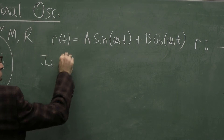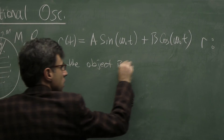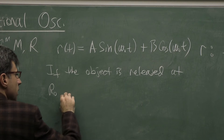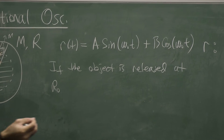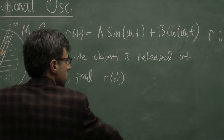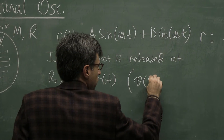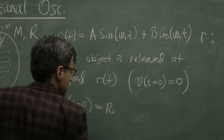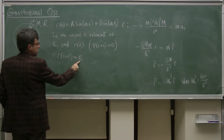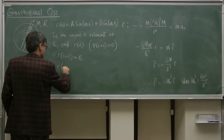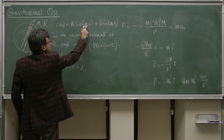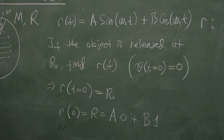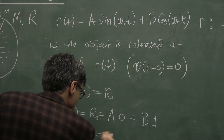Now, if the object is released at r₀ — released means it was initially stationary — we need to find r(t). So the initial conditions are: v(0) = 0 and r(0) = r₀. Using the first initial condition: r(0) = A sin(0) + B cos(0). Sin(0) is 0, and cos(0) is unity at t = 0, so B equals r₀.